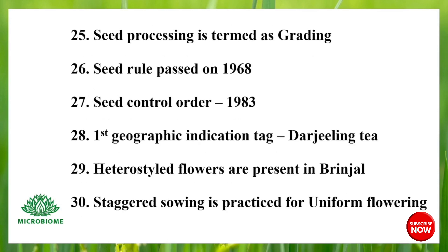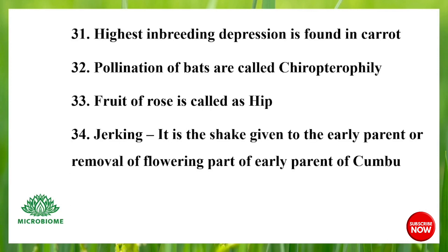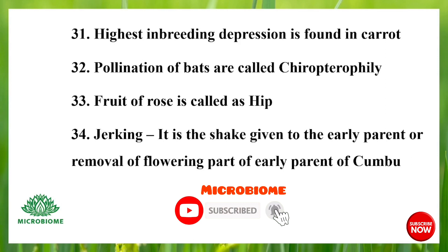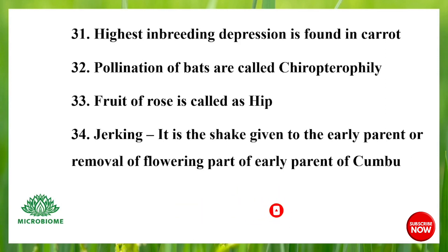Seed processing is termed as grading. Seed Rules were passed in 1968. The Seed Control Order was issued in 1983. The first Geographical Indication tag was for Darjeeling tea. Heterostyled flowers are present in brinjal. Staggered sowing is practiced for uniform flowering. The highest inbreeding depression is found in carrot. Pollination by bats is called chiropterophily. The fruit of rose is called a hip.